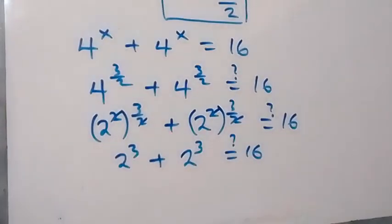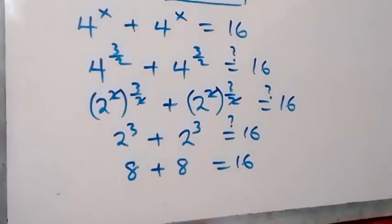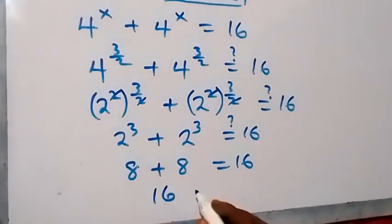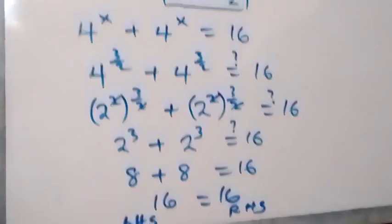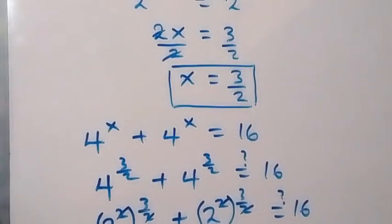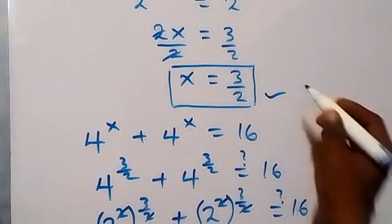From here, we have this as 2 times 2 times 2, which is 8, plus 8. Is it equal to 16? 8 plus 8 is 16, and it is equal to 16. We have left-hand side equal to right-hand side, and hence we can say that x equals 3 over 2 satisfies this given problem.